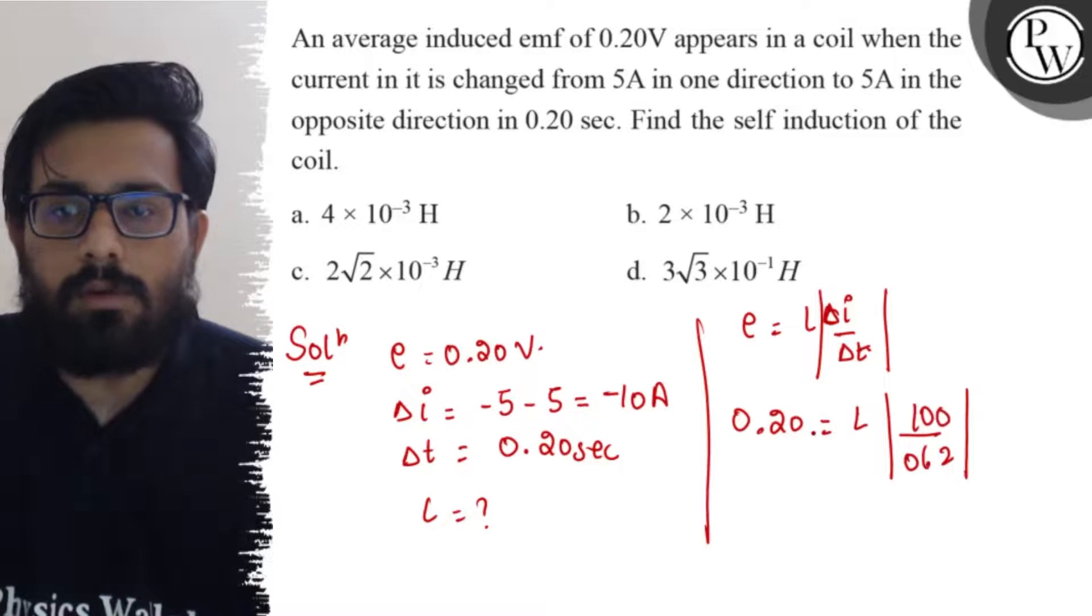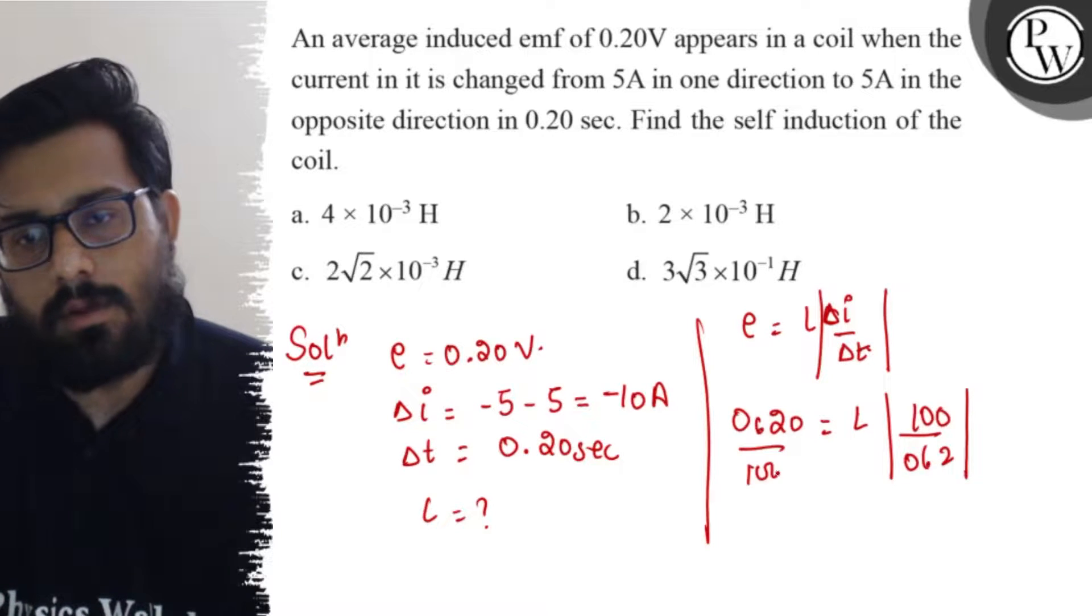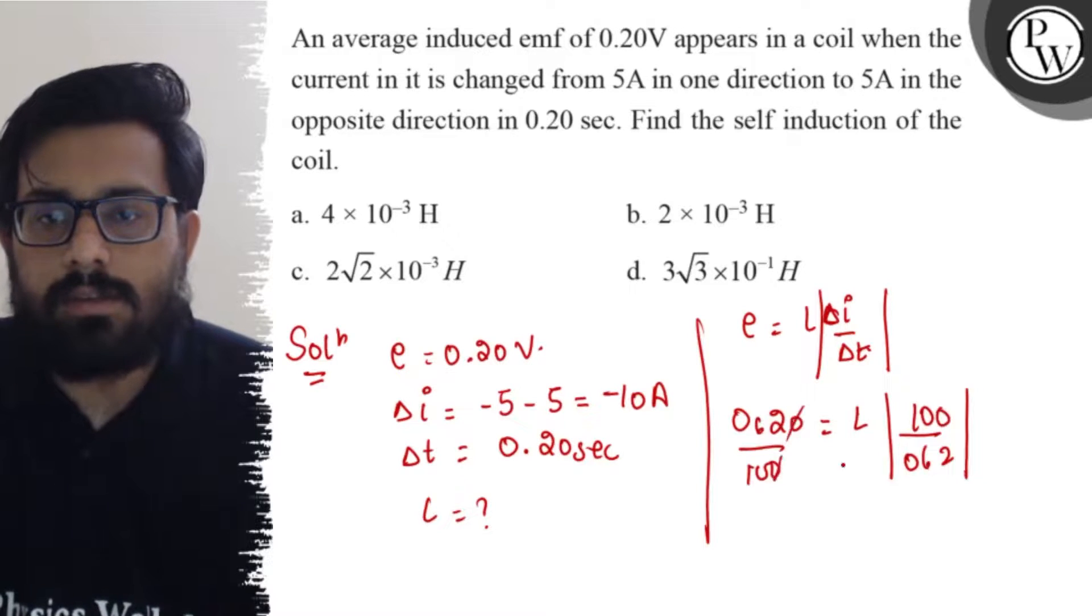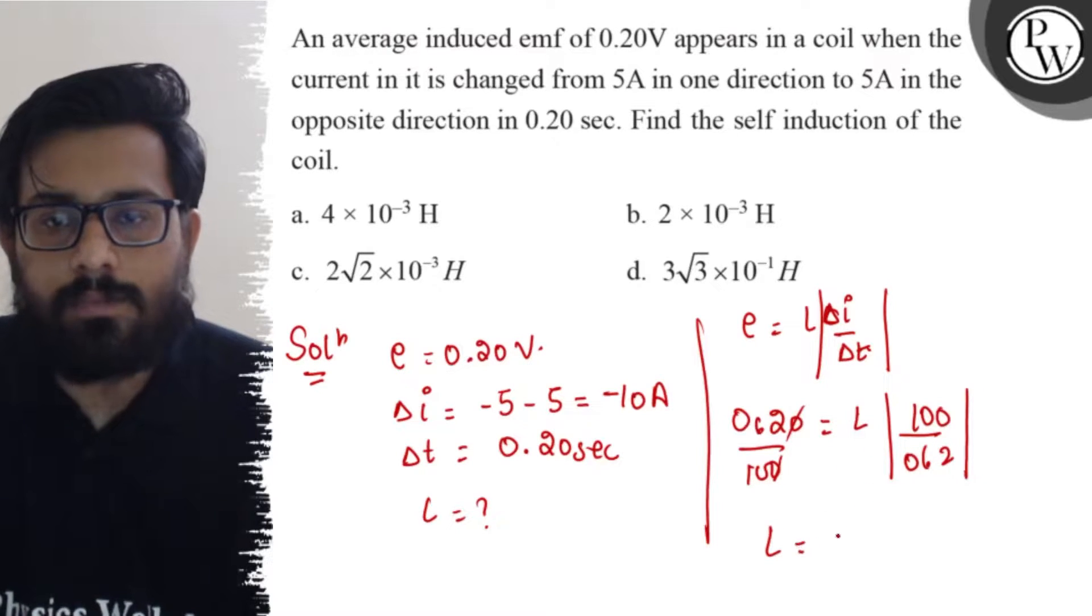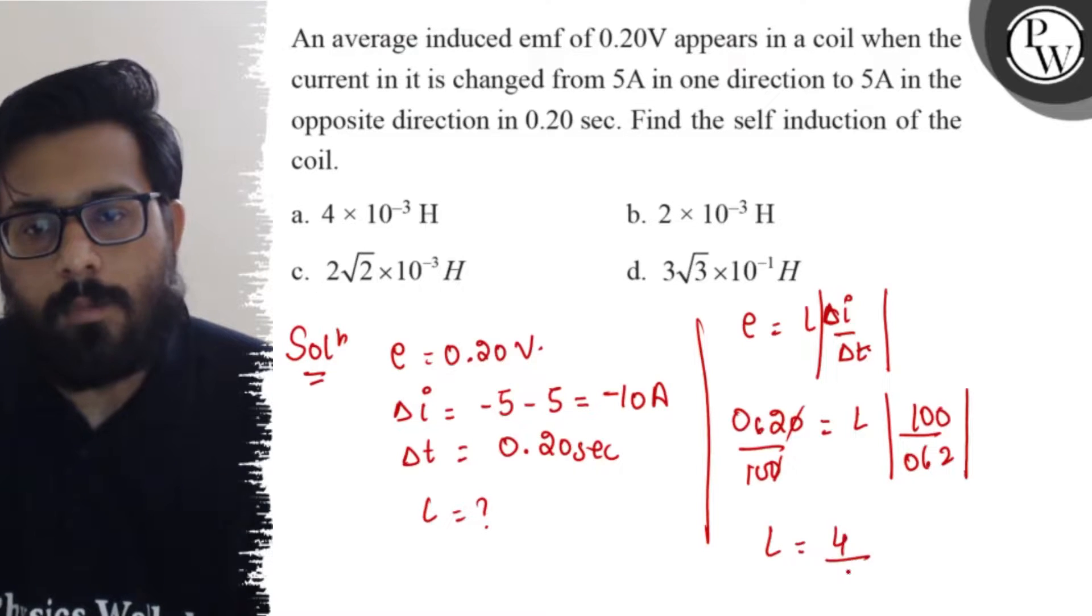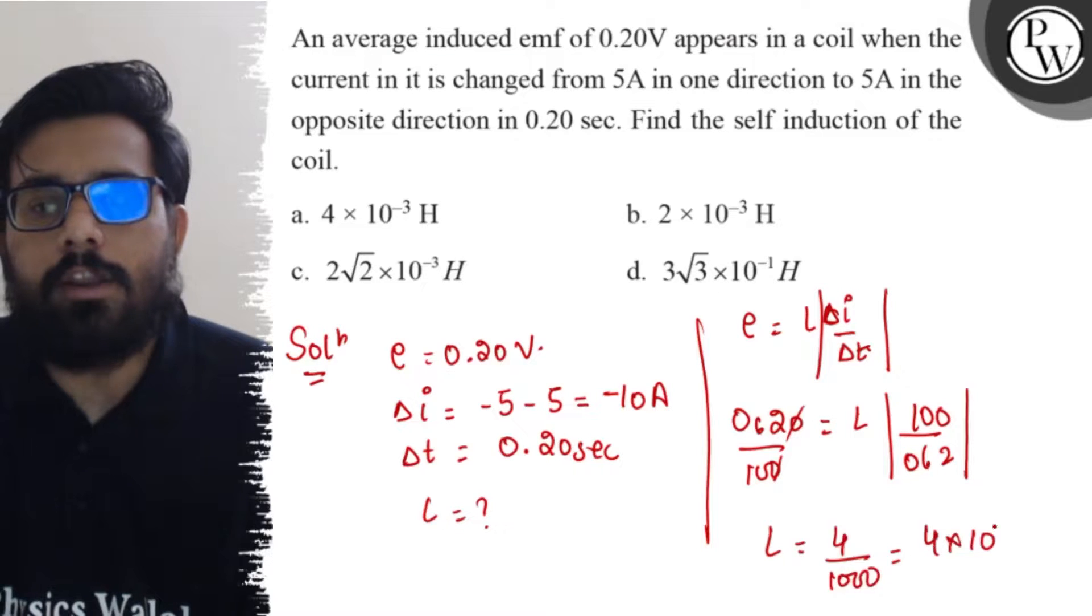So 0.2 and 0.2 cancel. The value of L comes out to be 4 upon 1000, which is 4 into 10 to the power minus 3.